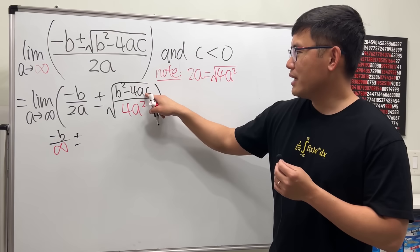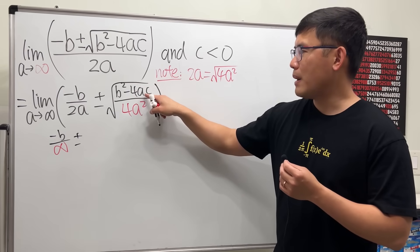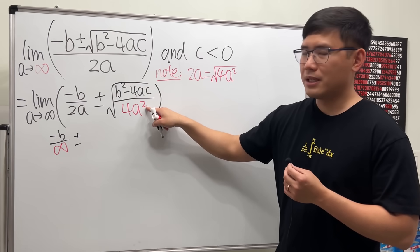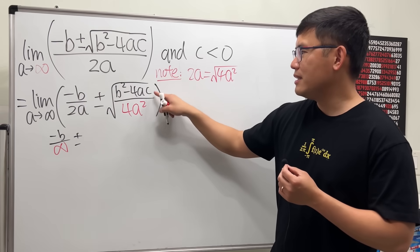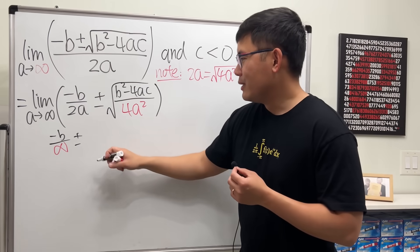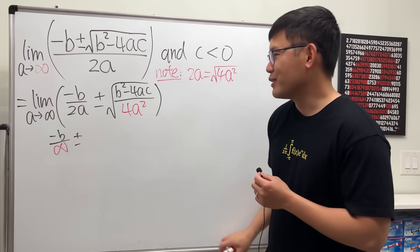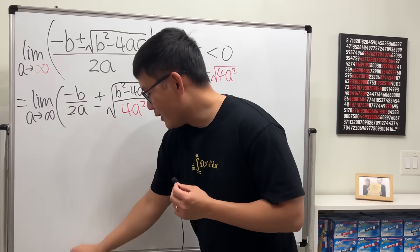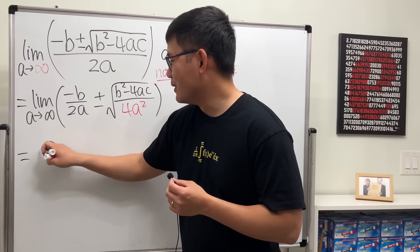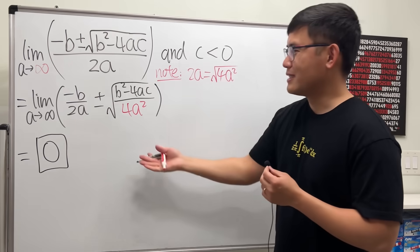Secondly, you just have to look at this—the power on the top is just one, the power on the bottom is two, so the bottom is going to dominate the top. You're also going to get zero. So all in all, this right here is just equal to zero. Surprise, surprise.